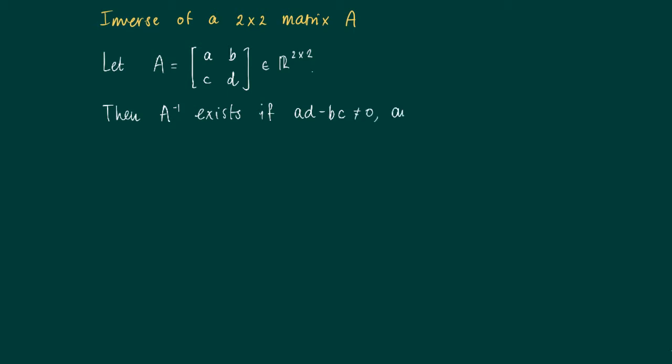And then the inverse of A is given by the reciprocal of this term. So 1 over ad minus bc times the matrix where the diagonal elements are interchanged, d, a, and we put a minus sign for the anti-diagonal.